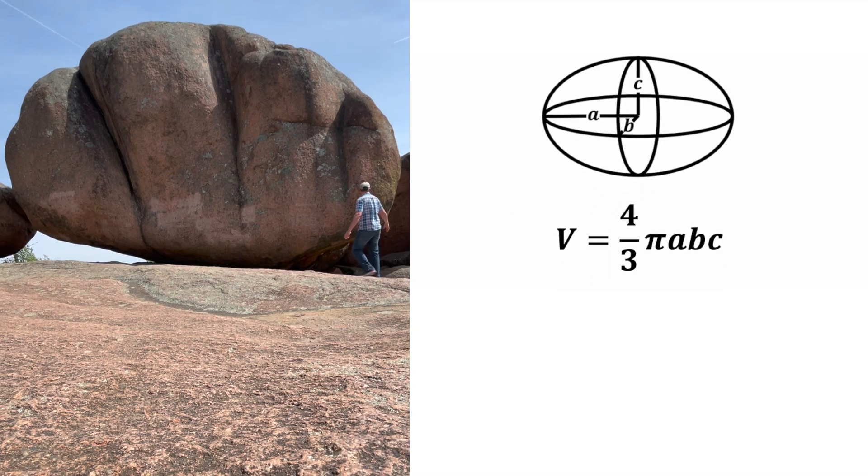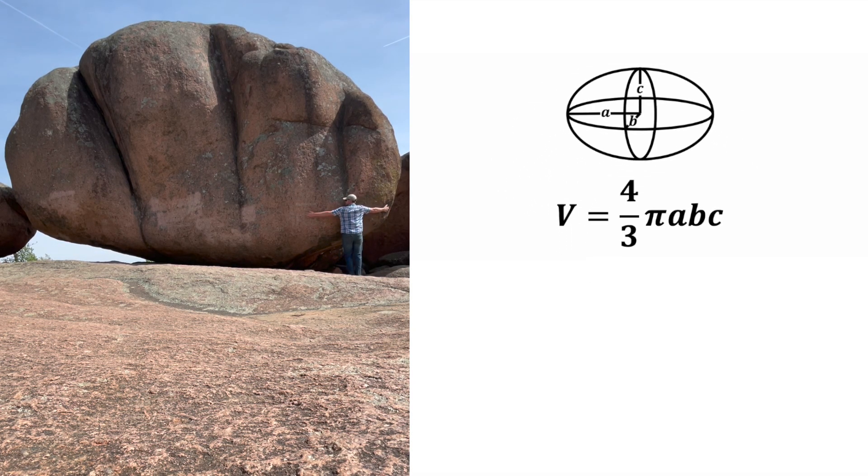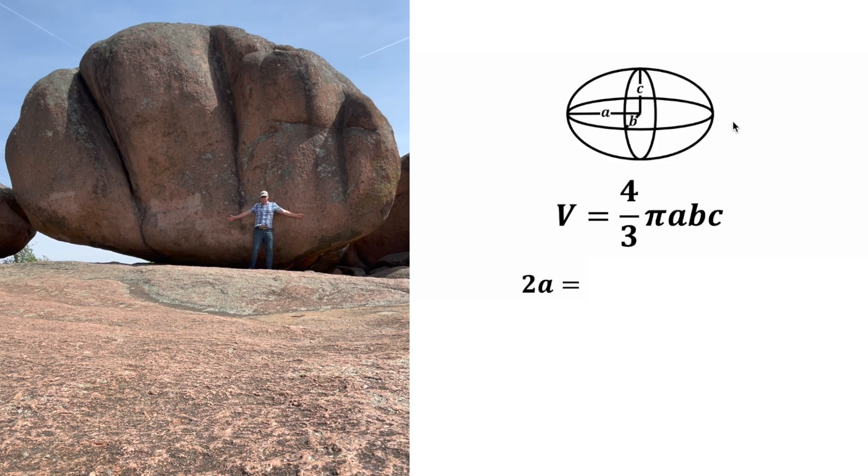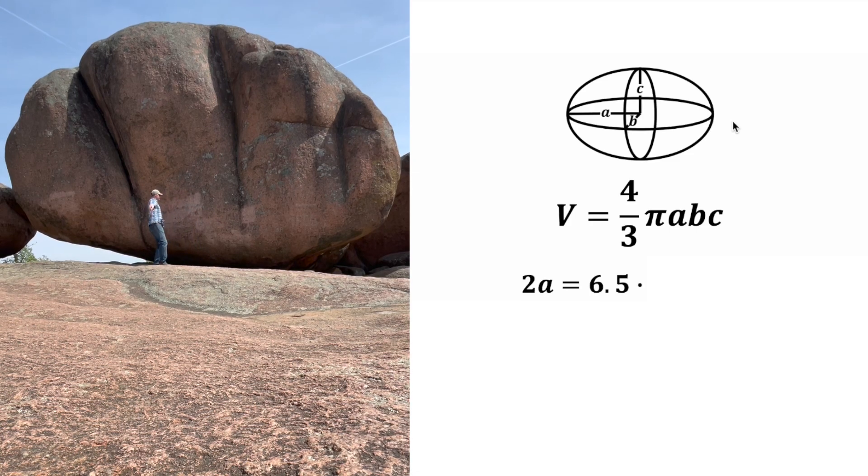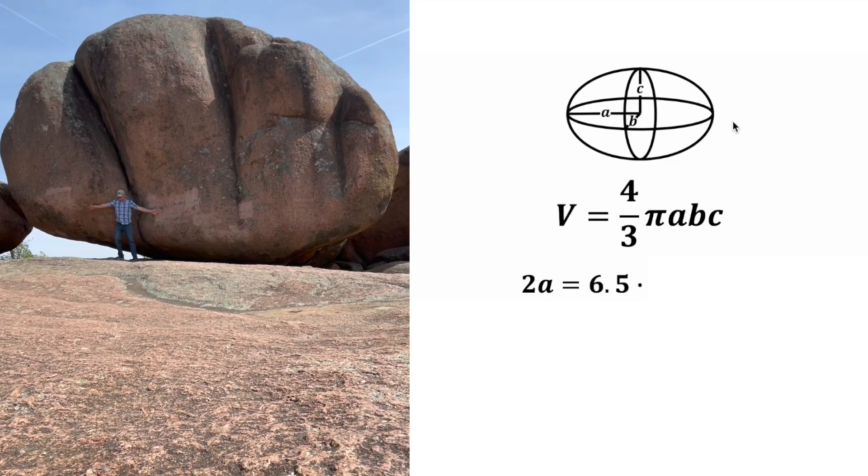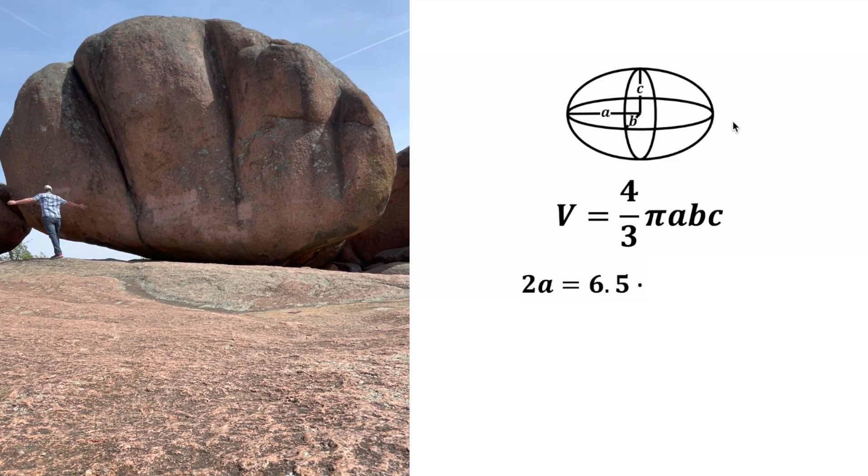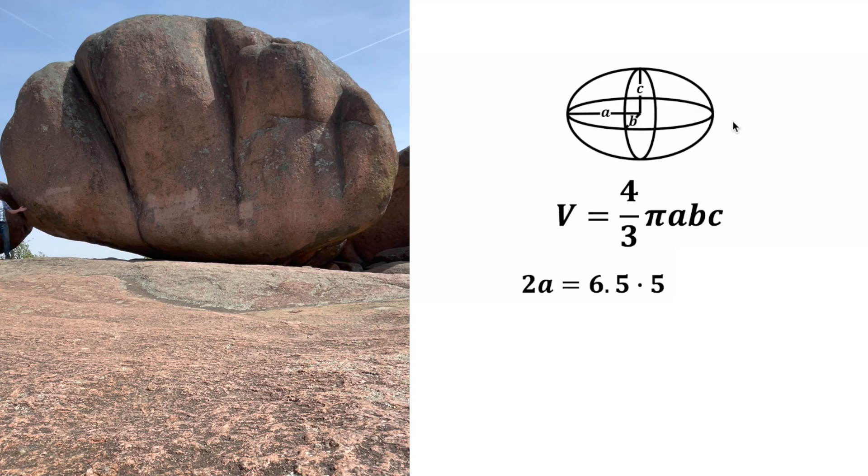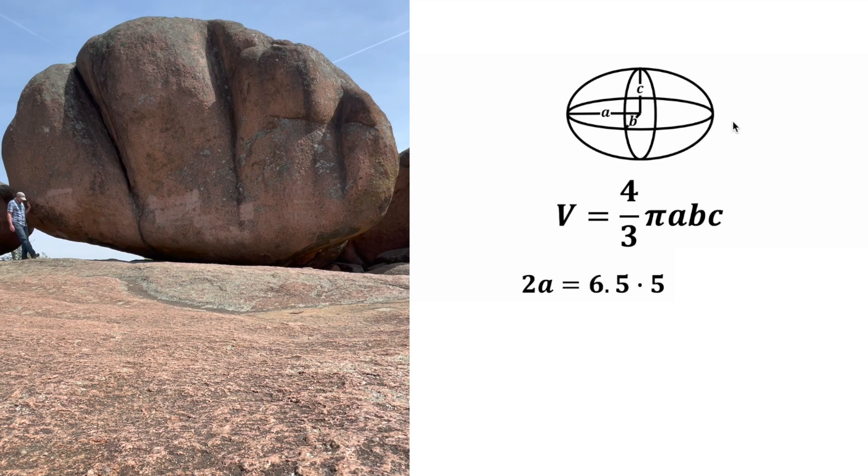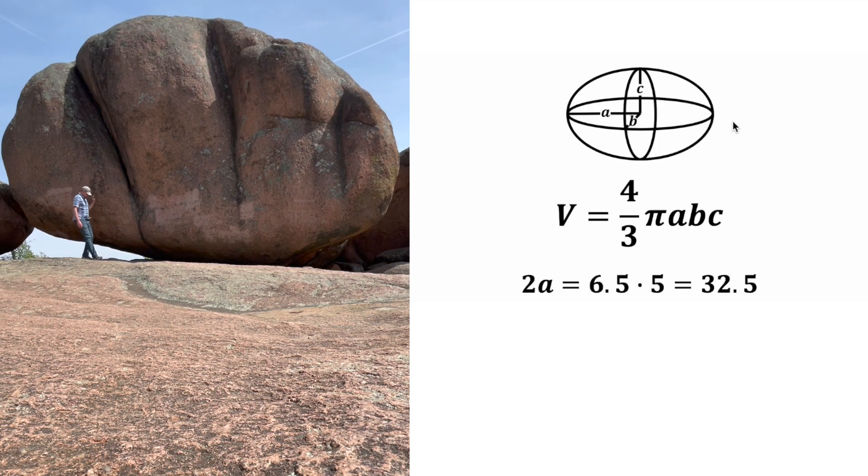So let's find the volume of this thing. First I want to measure how wide is it. That's going to be equal to 2A. So I'm going to use my wingspan to measure the distance. I'm six foot six, so let's assume my wingspan is 6.5 feet, and there's one, two, three, four, five of my wingspans measure the width of this rock. So that means that 2A is equal to 6.5 times 5, which is equal to 32.5 feet.